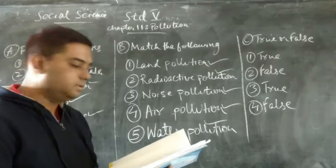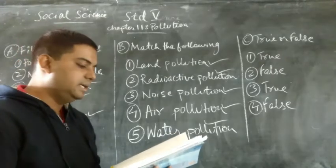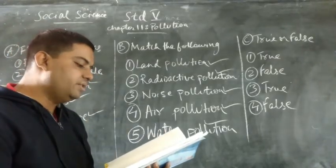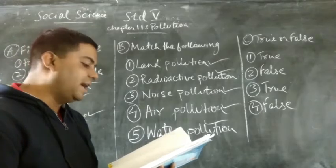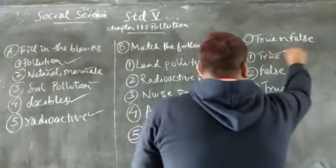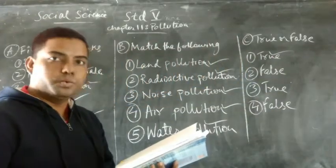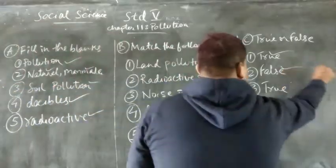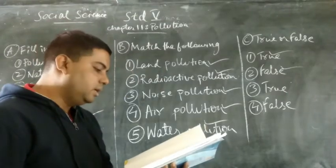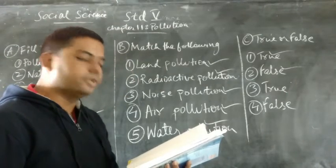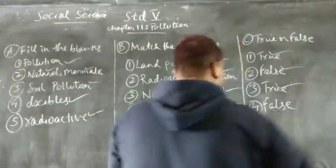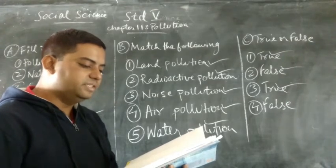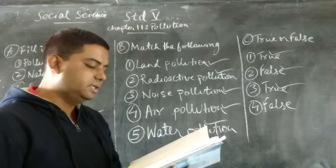Now we move on to question number C: write true for true statements and false for false statements. Question 1: Pollution is the contamination of land, water, and air by harmful substances — the answer is true. Question 2: All pollutants are human-made pollutants — the answer is false. Question 3: Land pollution is also known as soil pollution — the answer is true. Question 4: The comfort level of sound for humans is 200 to 240 decibels — the answer is false.